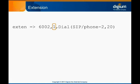The application we are using is Dial, which attempts to connect to another device or endpoint and bridge the call. We use the Dial application to ring phones, as well as to make outbound calls over a VoIP or traditional trunk.